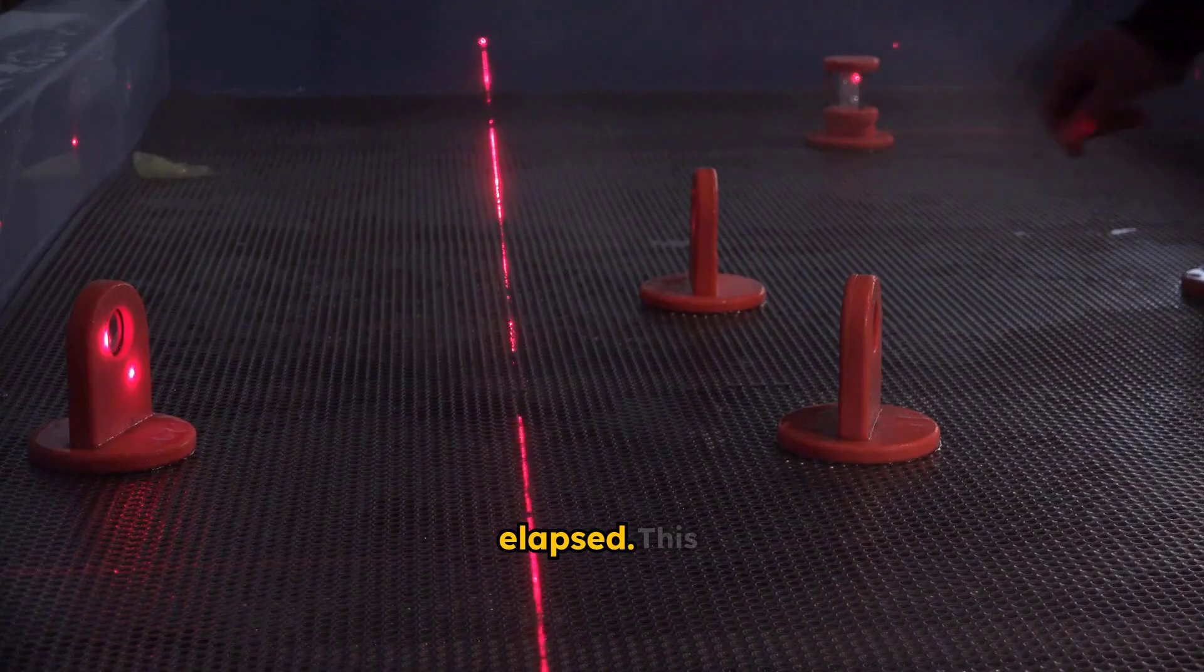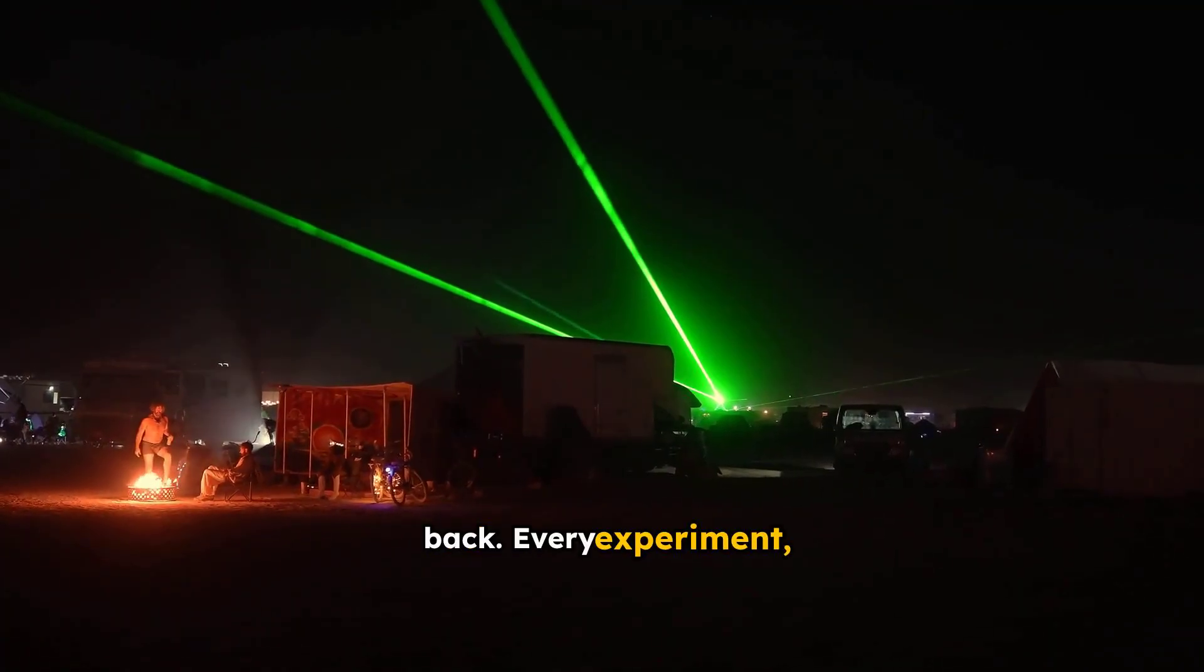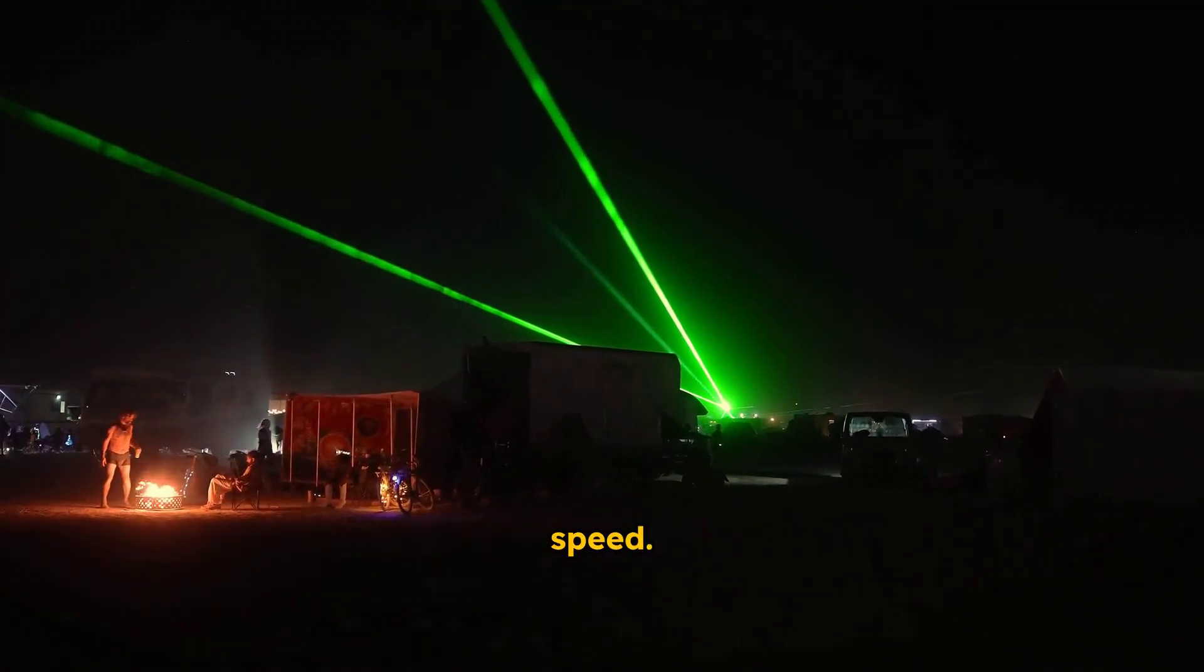We divide the total distance traveled by the total time elapsed. This gives us an average speed for the light's journey out and back. Every experiment, from Fizeau's rotating gears to modern laser interferometers, measures this two-way speed.